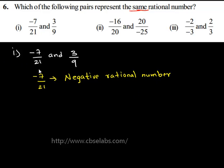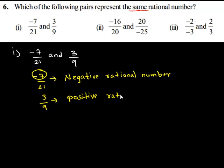This is because the numerator is negative. And 3 upon 9 is a positive rational number. This is because the numerator and the denominator are positive. So, a positive rational number and a negative rational number can never be same or equal as they are present at two different sides on the number line.